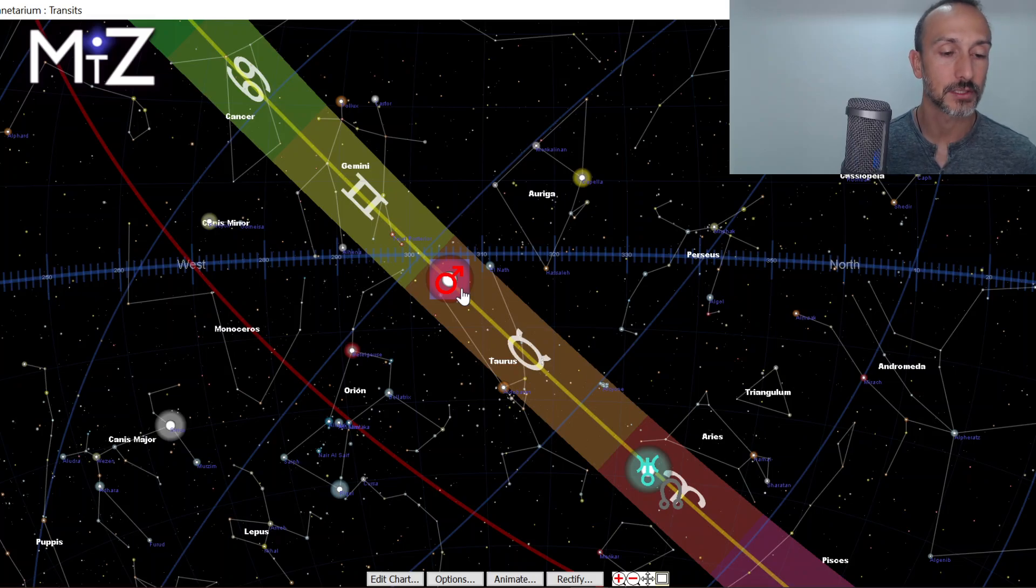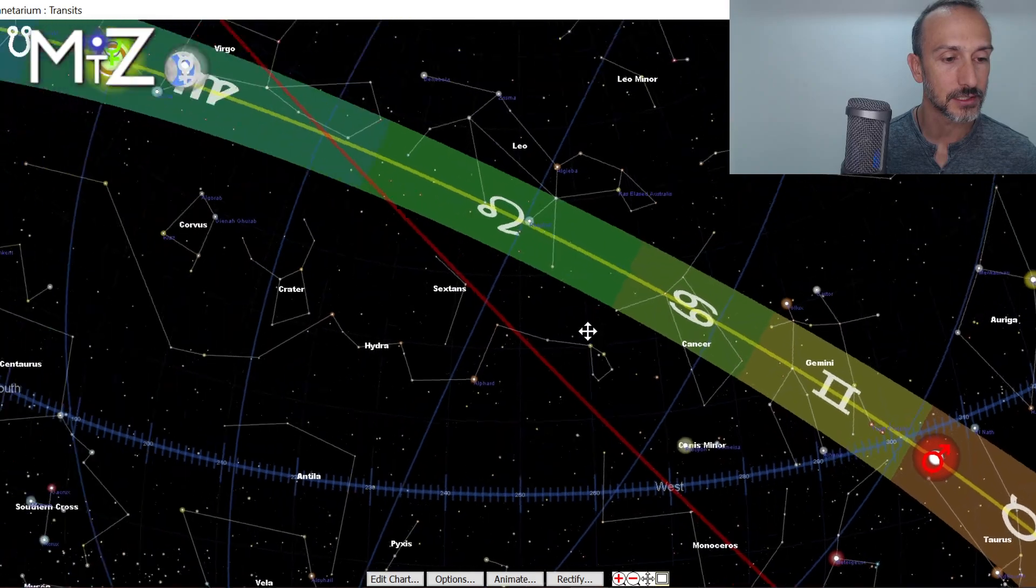And Mars has been in Taurus, so it's been about taking things, again, one step at a time with where we're putting our action, with our intentions, with our drives. And this is going to be especially the case, as we'll see Mars really slowing down now this week and starting to go retrograde at the end of the week on Sunday.